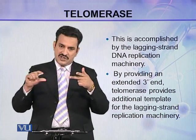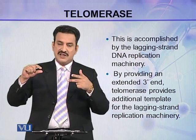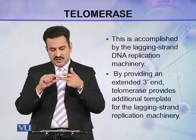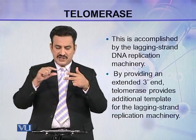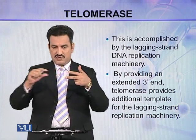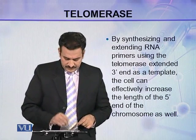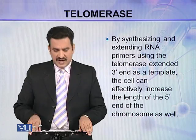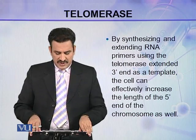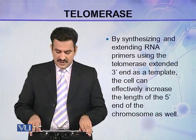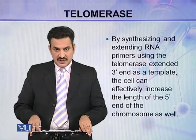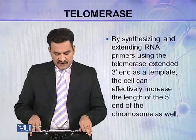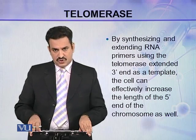Telomerase provides the additional strand for the lagging replication machinery to use, to complete the synthesis of that strand. By synthesizing and extending RNA primers using the telomerase-extended 3' end as a template, the cell can effectively increase the length of the 5' end of the chromosome as well.